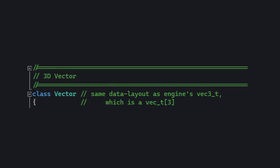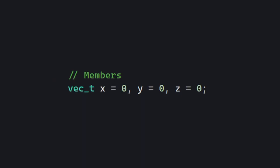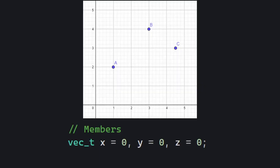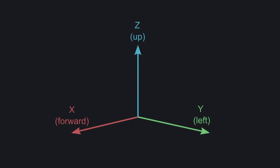The vector class has three members: X, Y, and Z. These are coordinates, and you use them to represent positions in space. In Quake, GoldSource, and so on, X is forward, Y is left, and Z is up.